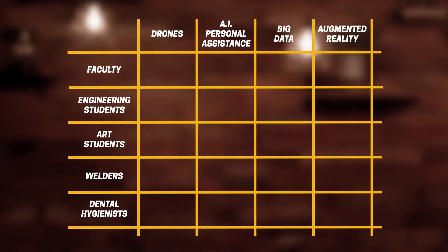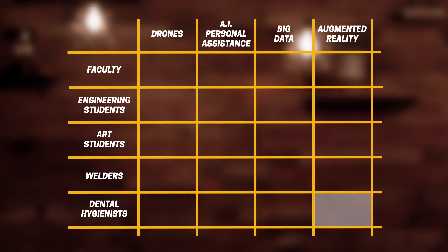What this technique does is focus thinking on the combination of ideas at the intersection. For example, if we took engineering students and drones, there are certainly possibilities we may know about there. But let's take dental hygienists and augmented reality — that focused thinking can yield new concepts.